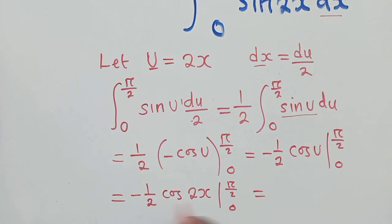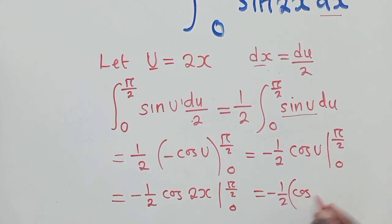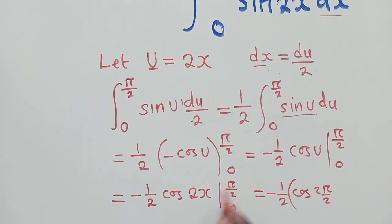So now we can substitute on x here. We have negative 1 over 2 cos, or we put the brackets, cos 2π/2. This π/2, when you substitute, it's equal to cos π. When we put a 0 here, 2 times 0, it will just be 0, so cos 0.